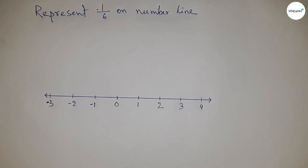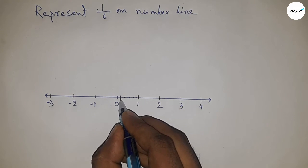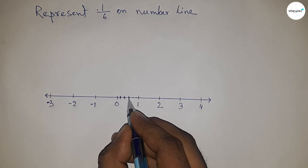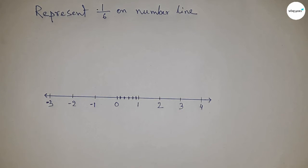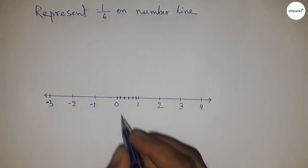Next, have to divide the length between 0 to 1 into 6 equal parts. So first dividing the distance between 0 to 1 into 6 parts, and this is the representation of 1/6 on number line.